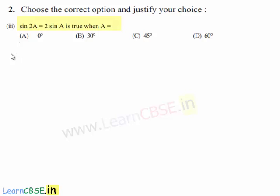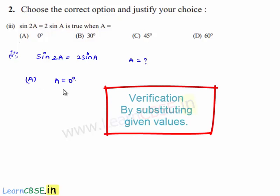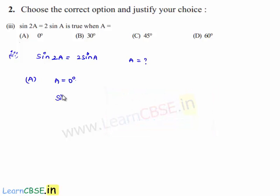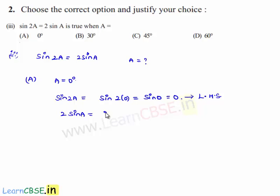Moving on to the second problem, third bit. In the question, it is given that sin 2A equals 2 sin A — for what value of A? Let us verify from the options. Option A gives A equal to 0 degrees. Substituting on the left hand side: sin 2 into 0 equals sin 0 equals 0. For the RHS: 2 times sin 0 degrees equals 0. So LHS equals RHS, and option A is the answer.